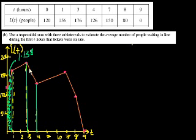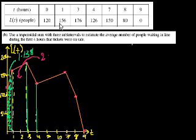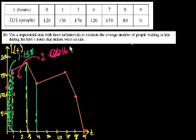What's the area of this bigger trapezoid? Its base is 2. The average value is between 156 and 176 — that's an easier one. 166 is right in between those two. So it's 2 times 166.